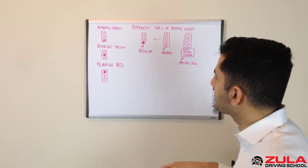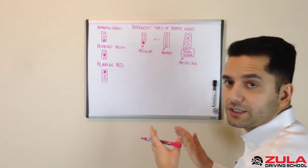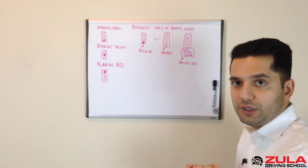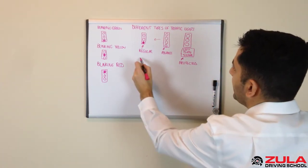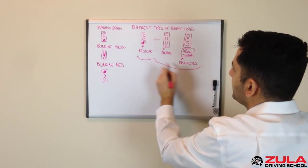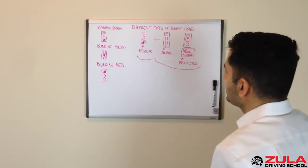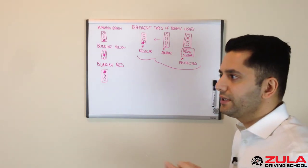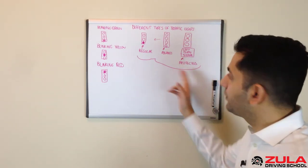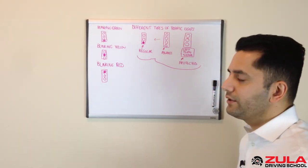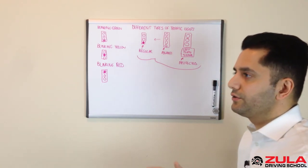So the point I'm trying to make here is when you're approaching an intersection and you know that you want to make a turn, you need to identify what kind of light you're dealing with. Is it the regular, is it the advanced, or is it the protected? Because if you get to the intersection and then try to figure out what kind of light you're dealing with, what if you had a safe gap to turn?